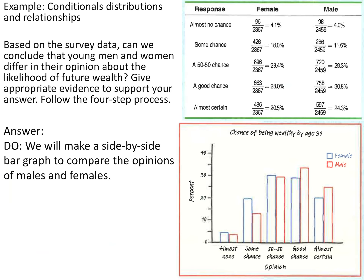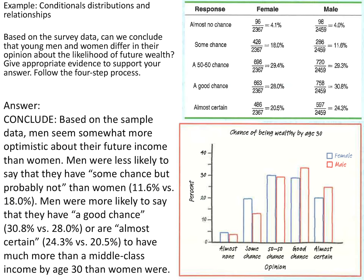When you get to the last step — conclude — that's when you interpret these results back into the context of the problem. Based on the sample data, men seem somewhat more optimistic about their future income than women. Men were less likely to say that they have some chance but probably not, compared to women, at 11.6% versus 18%.